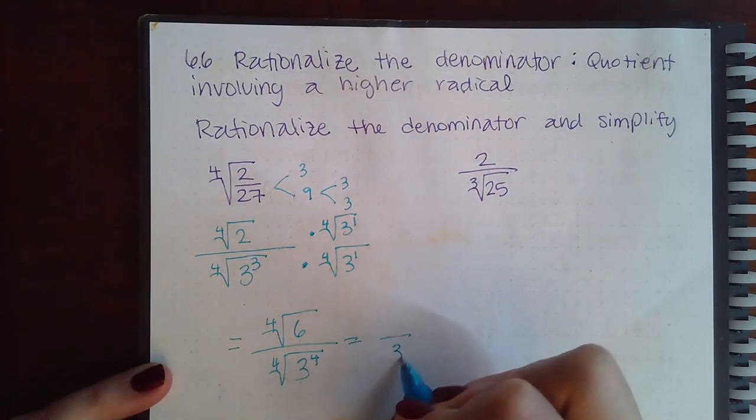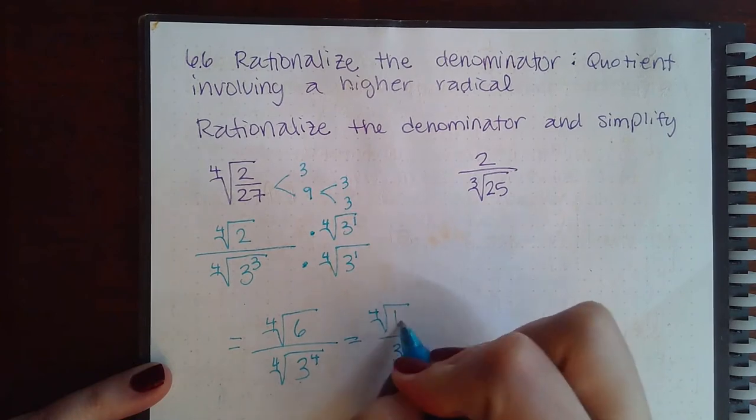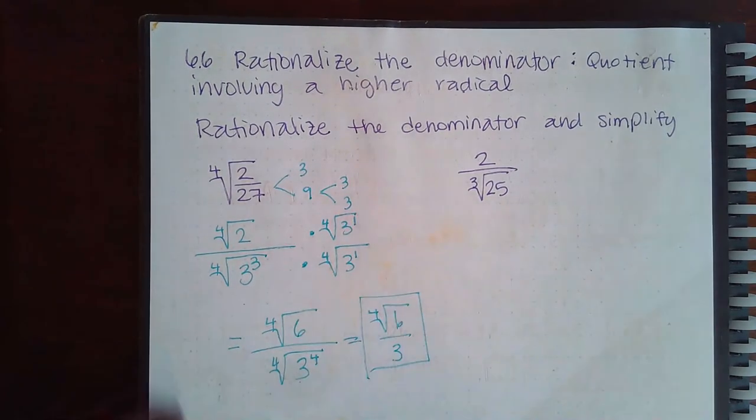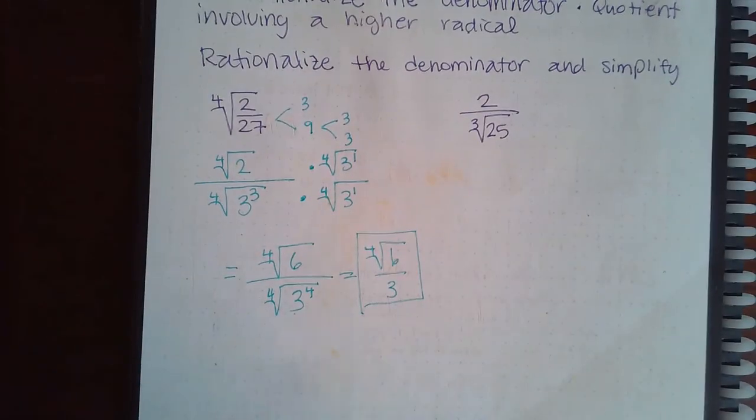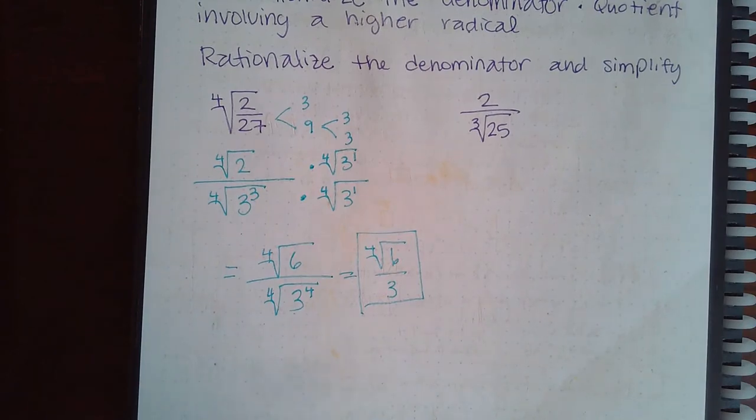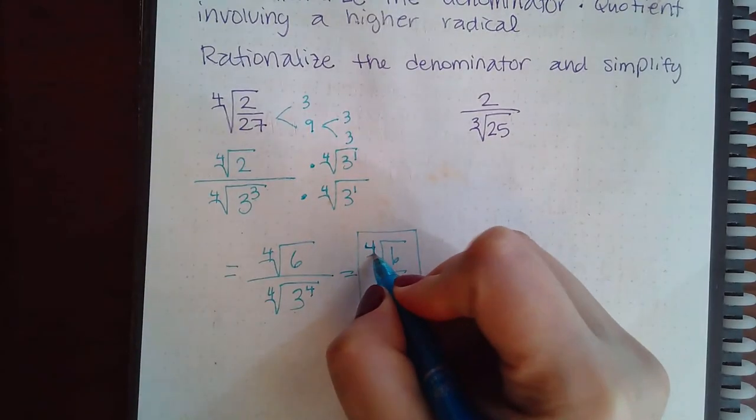And then we know a fourth power and a fourth root undo each other, and so this is the final expression. This is not one that you can do in the calculator because the calculator would just give you a decimal answer and Alex is going to want the exact answer that involves the root.